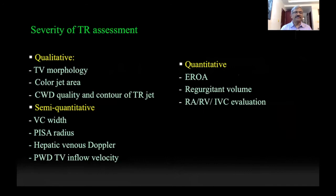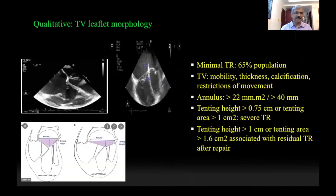How do you assess the severity of tricuspid regurgitation? There are three methods: qualitative, semi-quantitative, and quantitative. We will go through the details of each of these.